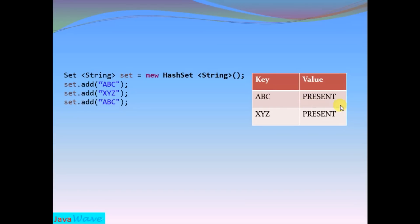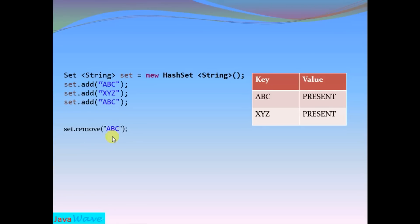In place of the HashMap value, it will store a constant PRESENT. For the second value, it similarly calculates the hash code and index, storing the actual value as a key with PRESENT as the value. For the third object, which is the same as the first, since HashMap does not allow duplicate keys, it will not be added — no exception at compile time or runtime, but the value will simply not be added. For removal, it calculates the hash code and index and removes the entire row.